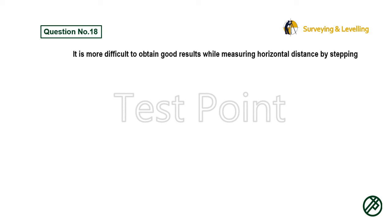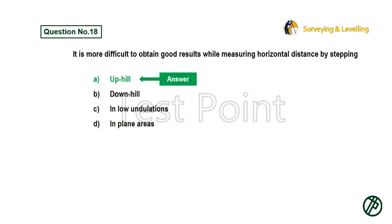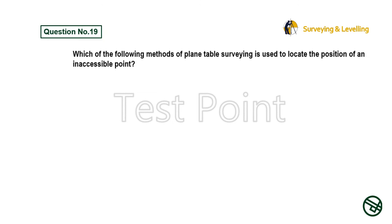Question 18: It is more difficult to obtain good results while measuring horizontal distance by stepping — Option A: Uphill. Option B: Downhill. Option C: In low undulations. Option D: In plain areas. Answer is Option A: Uphill.